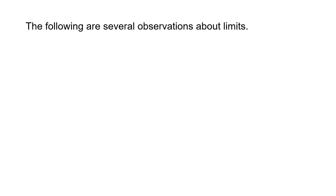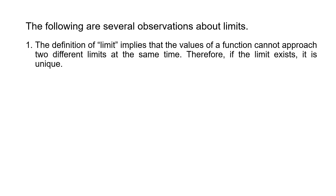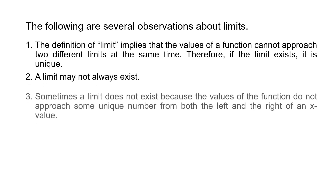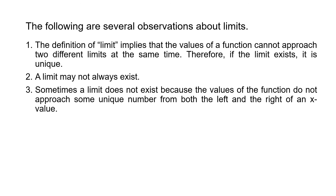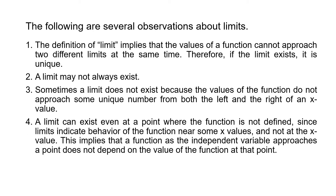The following are several observations about limits. The definition of limit implies that the values of a function cannot approach two different limits at the same time; therefore, if the limit exists, it is unique. A limit may not always exist — sometimes a limit does not exist because the values of the function do not approach the same value from both the left and the right. A limit can exist even at a point where the function is not defined, since limits indicate the behavior of the function near some x value, not at the x value itself.